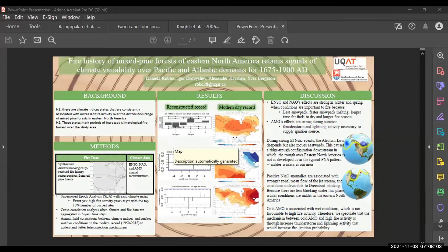So let me state my hypothesis. Hypothesis 1: There are climate indices states that are consistently associated with increased fire activity over the distribution range of mixed pine forests in eastern North America. And my hypothesis 2 is that these states mark periods of increased climatological fire hazard over the study area.